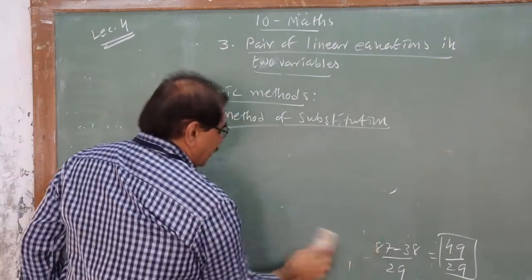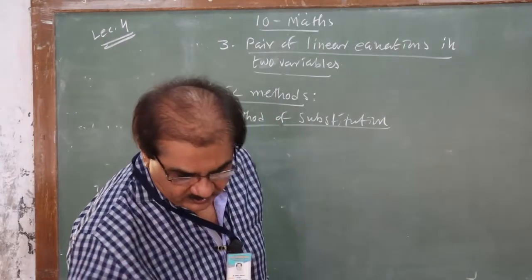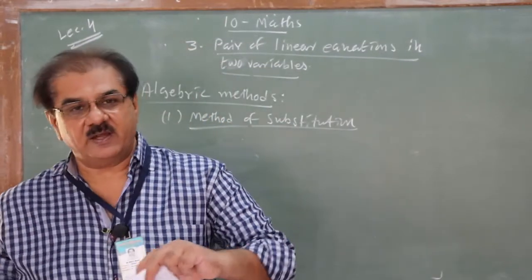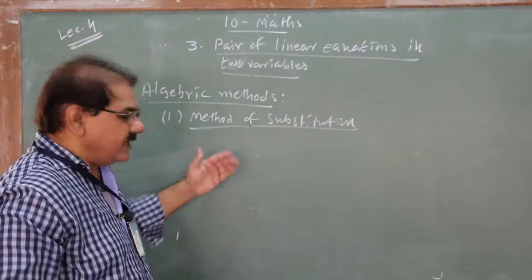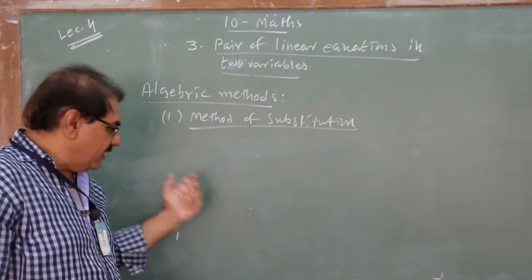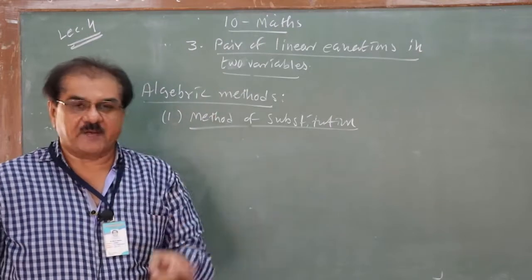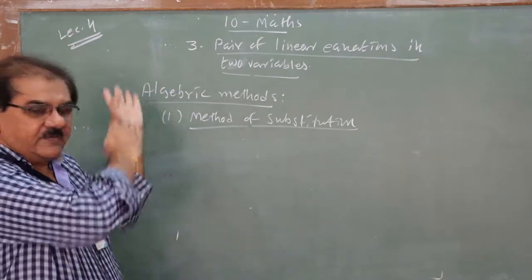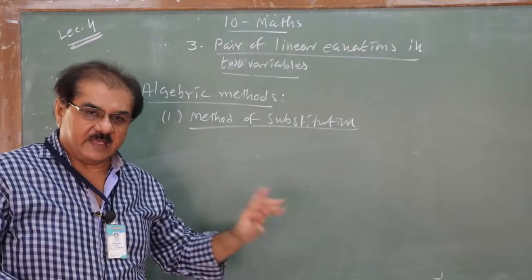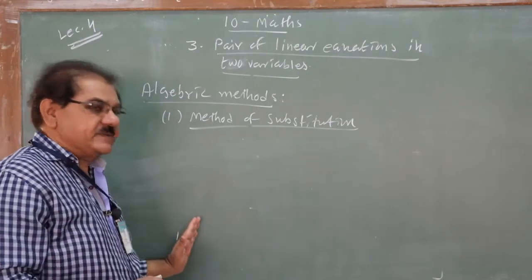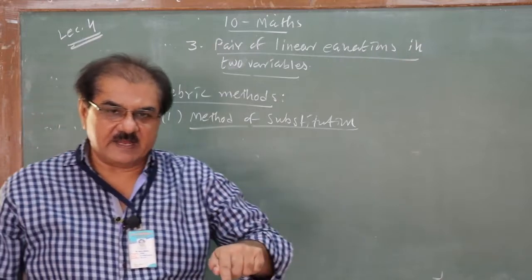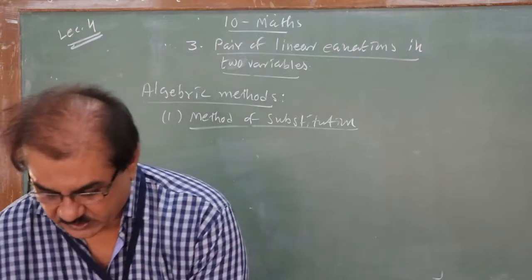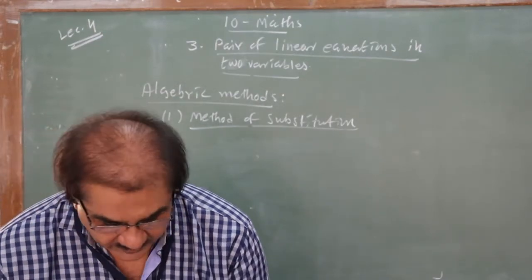Let me summarize the method once more. Given two equations, number them as Equation 1 and Equation 2. From either equation, express one variable in terms of the other — call it Equation 3. Substitute Equation 3 into the other equation to find the exact value of one variable, then substitute that value back into Equation 3 to find the second variable. We'll do more questions to understand it properly.